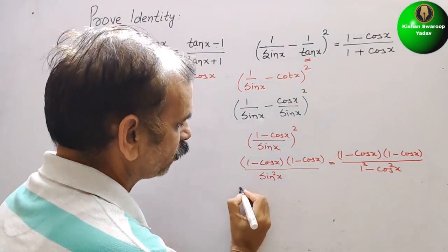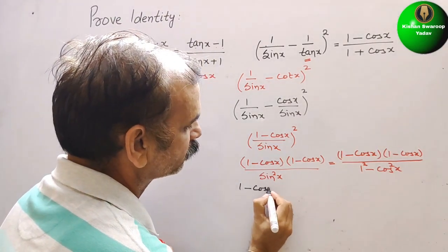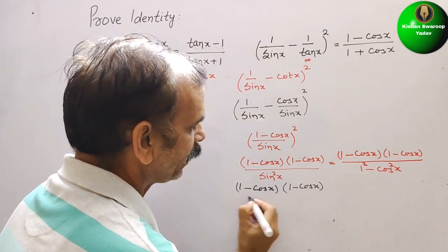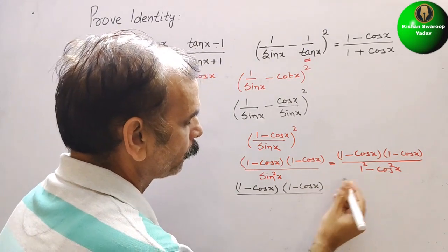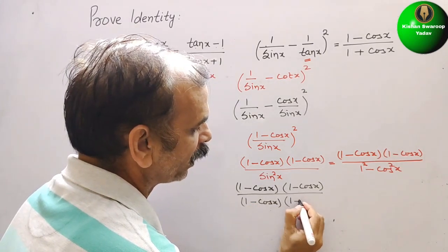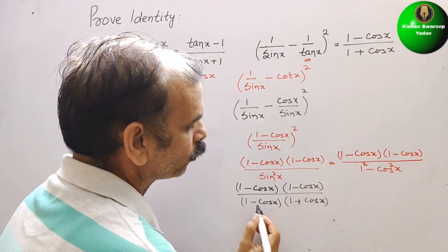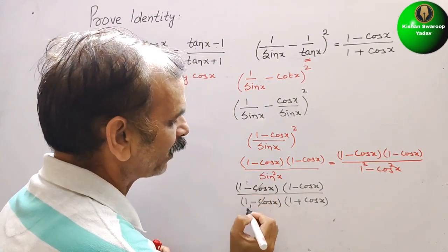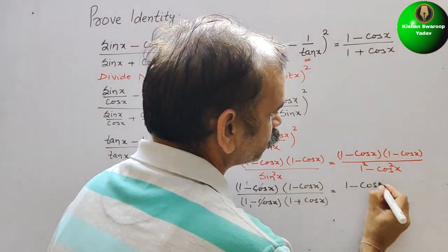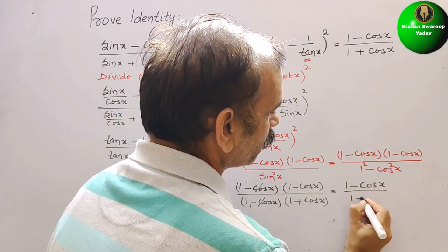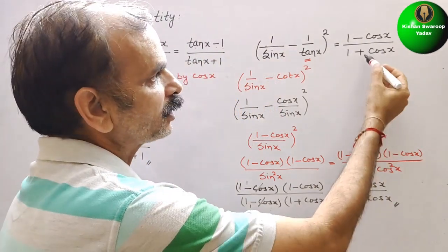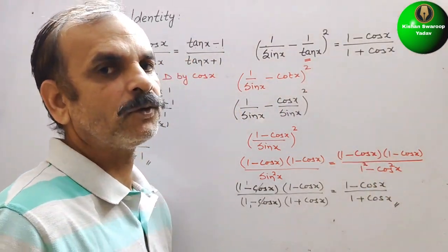Using the a² - b² identity, 1 - cos²x = (1 - cos x)(1 + cos x). So the expression becomes (1 - cos x)(1 - cos x) divided by (1 - cos x)(1 + cos x). The (1 - cos x) terms cancel, and we get (1 - cos x)/(1 + cos x). This is your LHS, and RHS is also the same. So like this we have to do it.